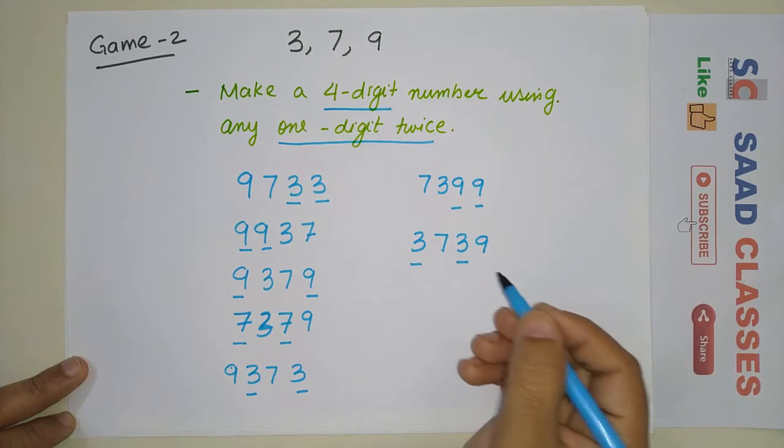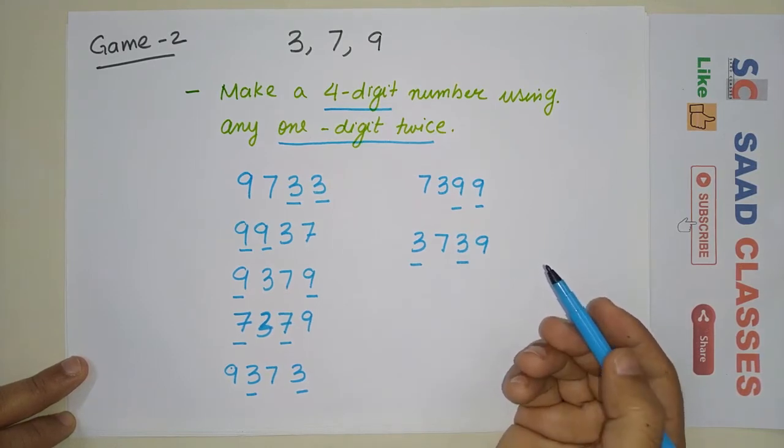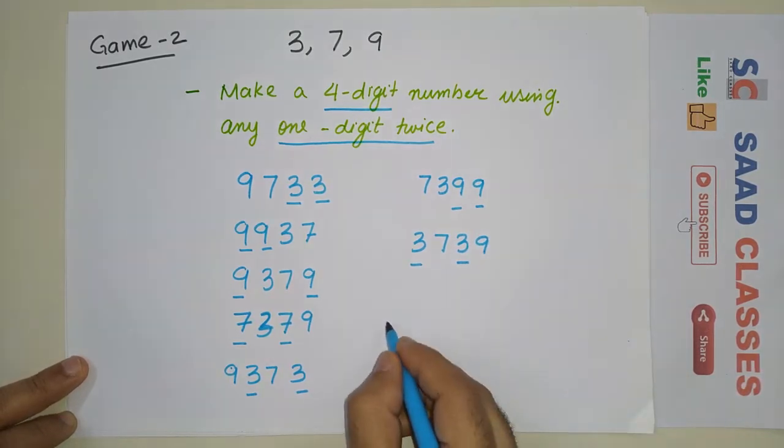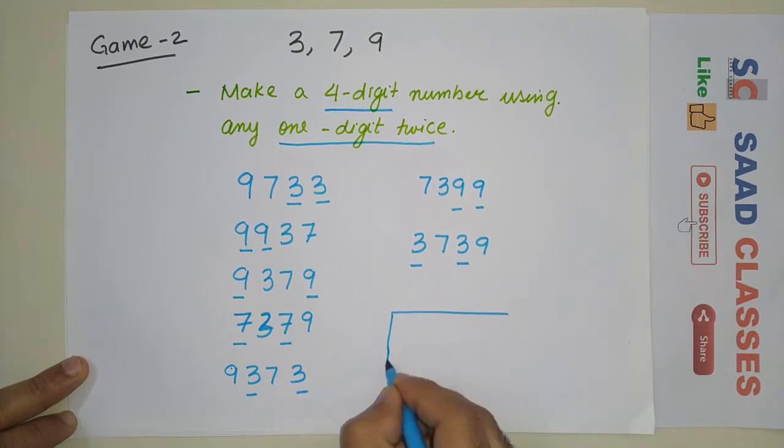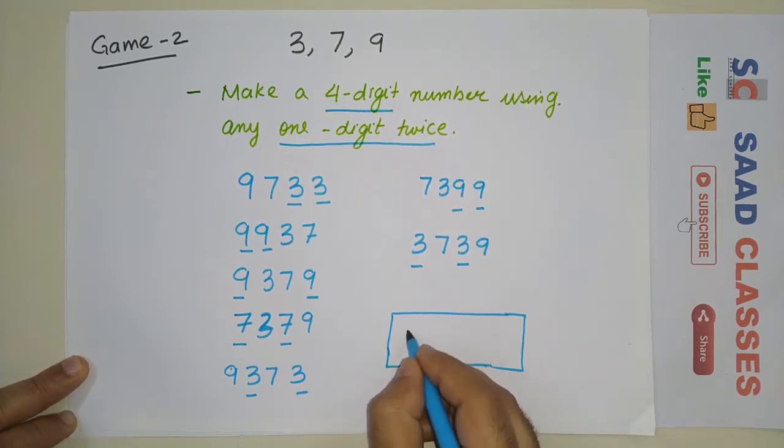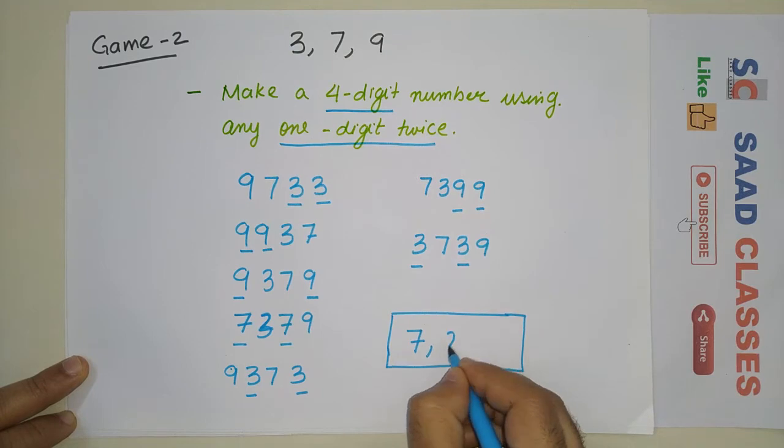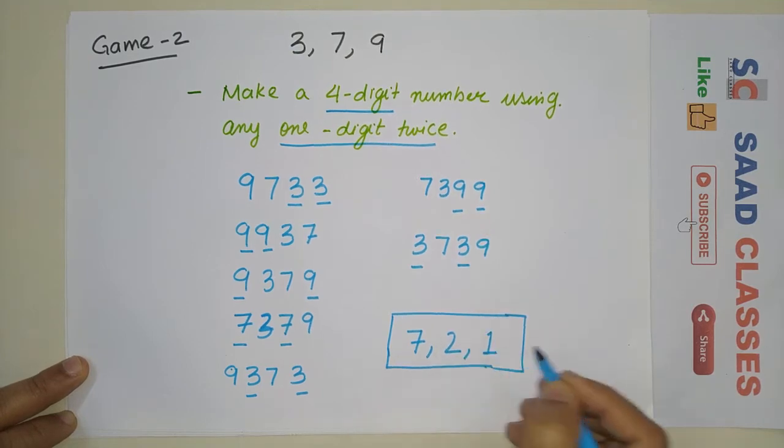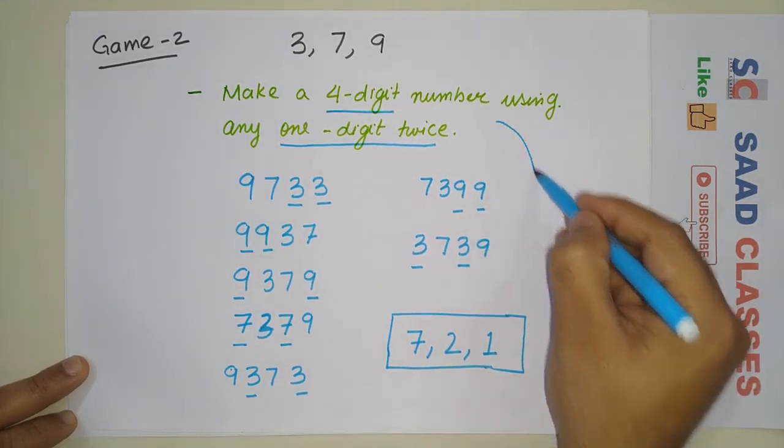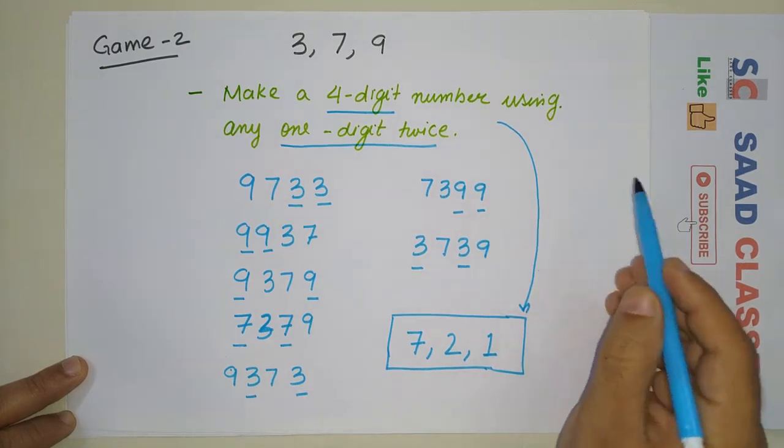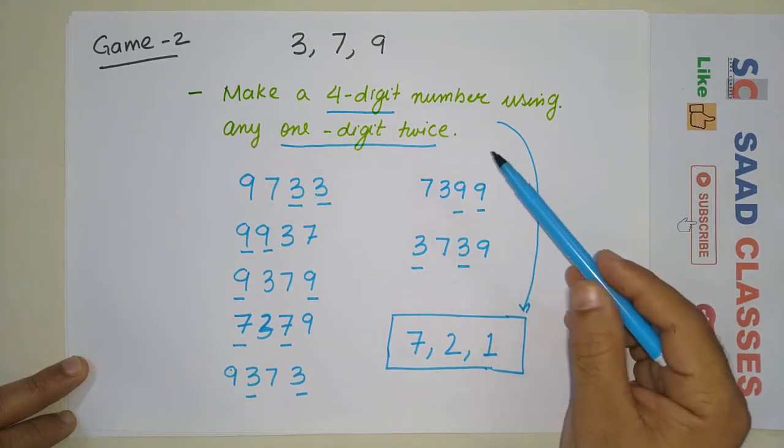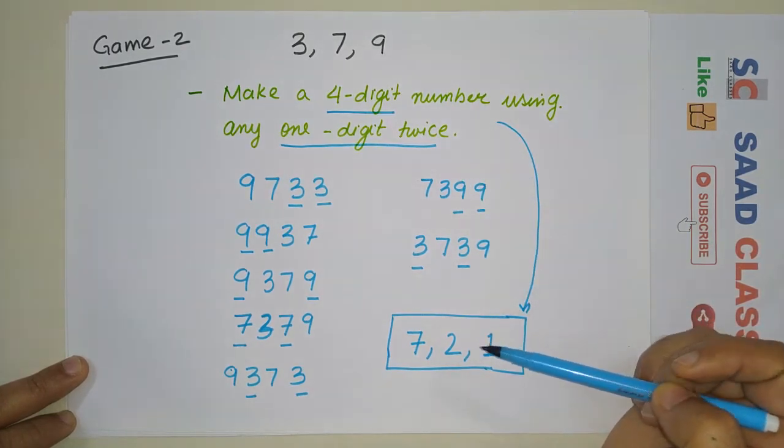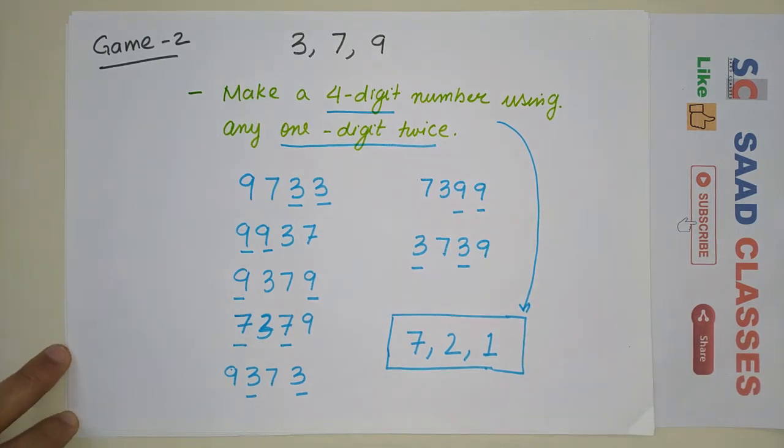So you can make many numbers. This is my game. Now I will give you an example before leaving. I'm giving you three digits: 7, 2, 1. The rule will be the same - you have to make many four-digit numbers using one digit twice. Thanks for watching Saath Classes.